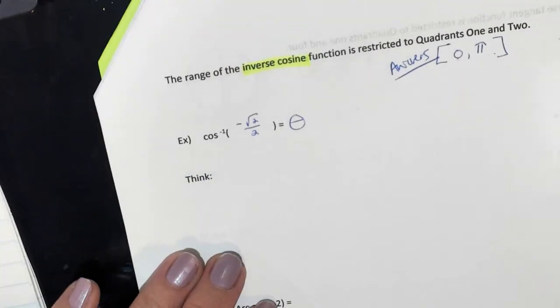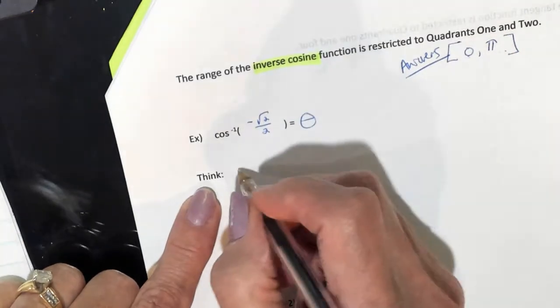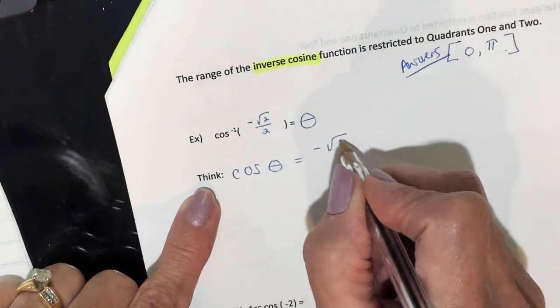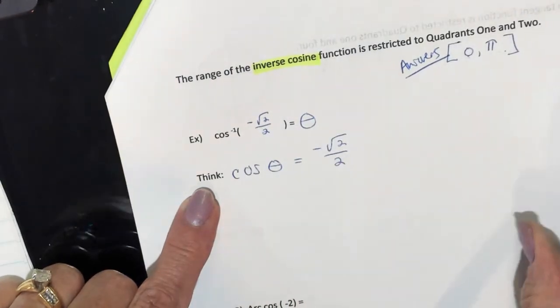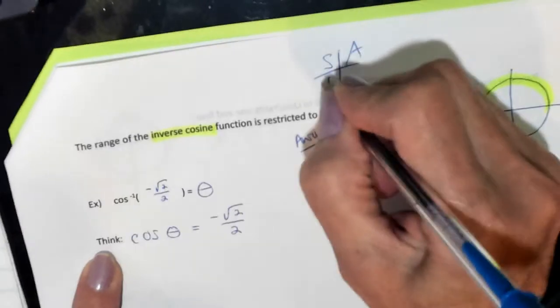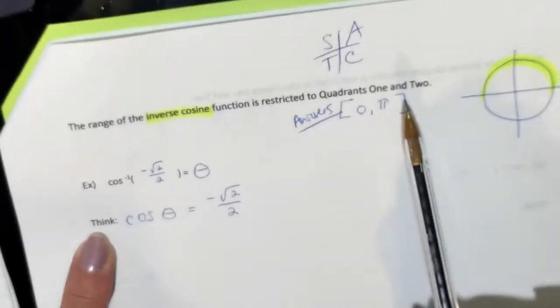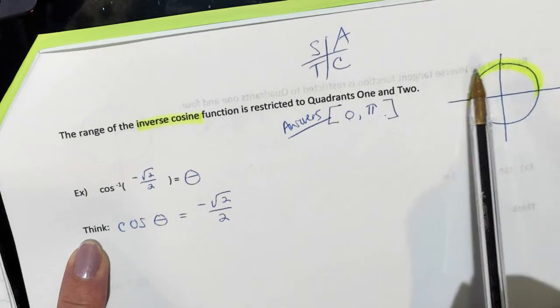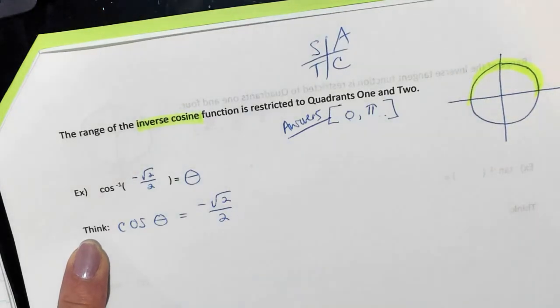Let's look at the first one: inverse cosine of negative square root of 2 over 2 equals theta. This means the cosine of what angle equals negative root 2 over 2. Where's cosine negative? Using ASTC and looking at only two quadrants — we're definitely in quadrant 2.